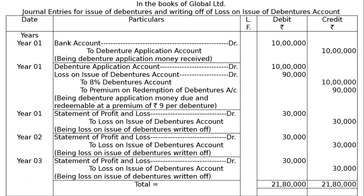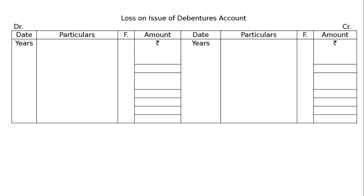Now for the preparation of the loss on issue of debentures account, this is a ledger. Draw the ledger format. On the debit side, for the second journal entry, debenture application account is debited to loss on issue of debentures account, which is then to the 8% debentures account. In the loss on issue of debentures account, the debit entry is to 8% debentures account Rs 90,000 in year 1.